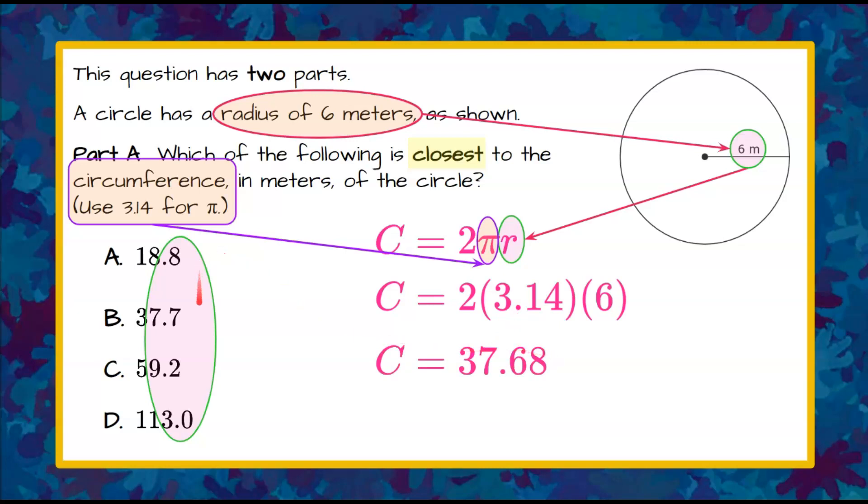Now each one of these is rounded to the nearest tenth. So I'm going to look at the hundredths digit. Seeing as it is 5 or greater, we're going to round up. So it's going to be 37.7 rounded to the nearest tenth. And that is answer choice B.